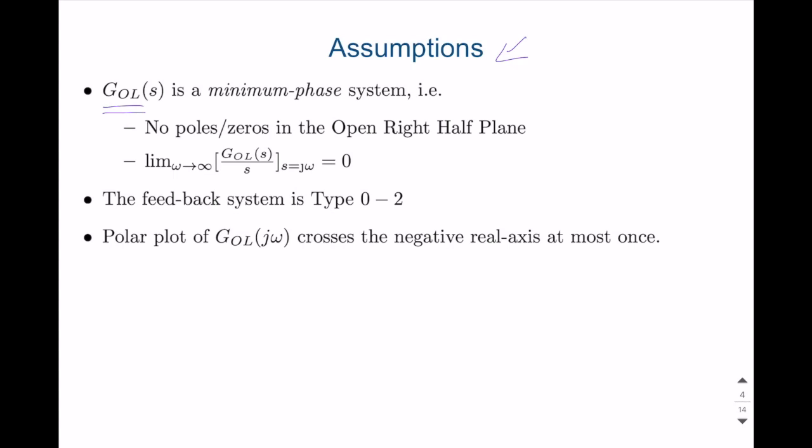GOL or Open-Loop Transfer Function is a minimum phase system. So what is a minimum phase system? It is this: no poles or zeros in the open right half plane. So this region is not allowed for this phase of the class. Also, you need to check this criteria, which means that GOL where S is going to infinity should be equal to 0, which is very common, which technically says that the system should be causal.